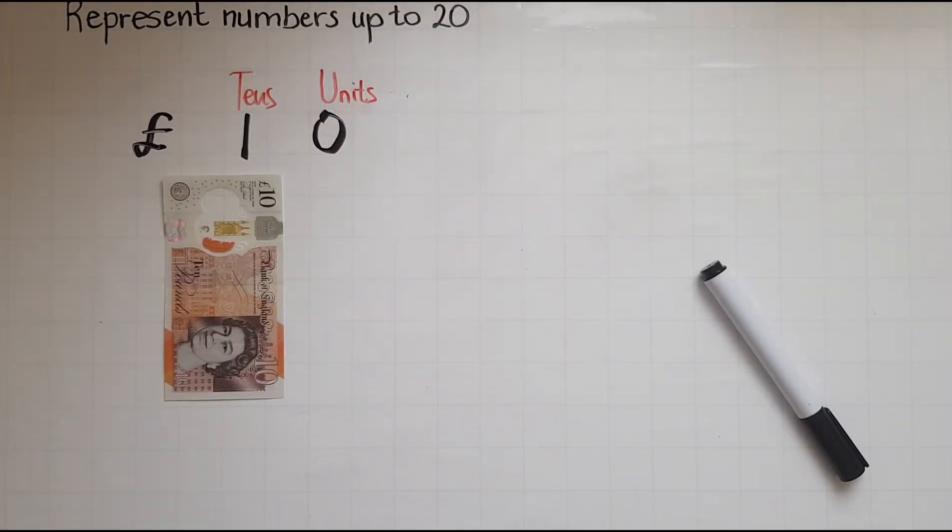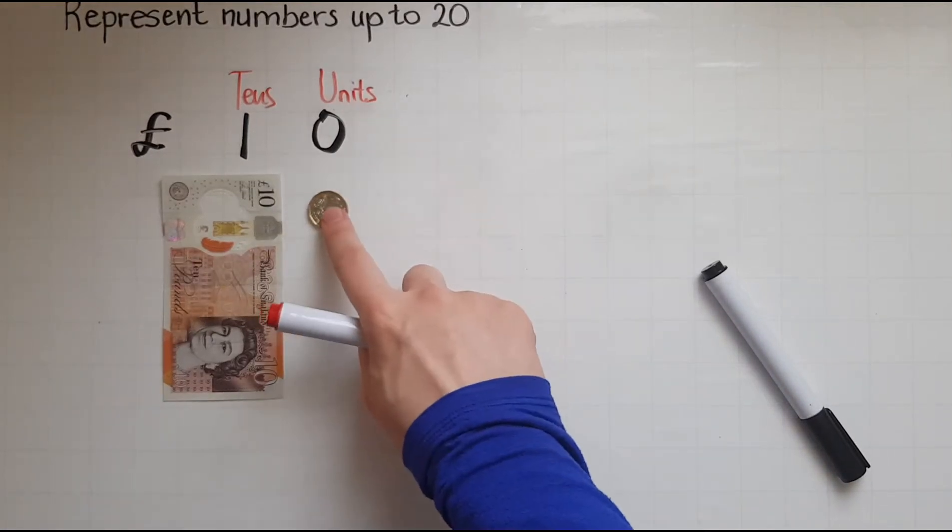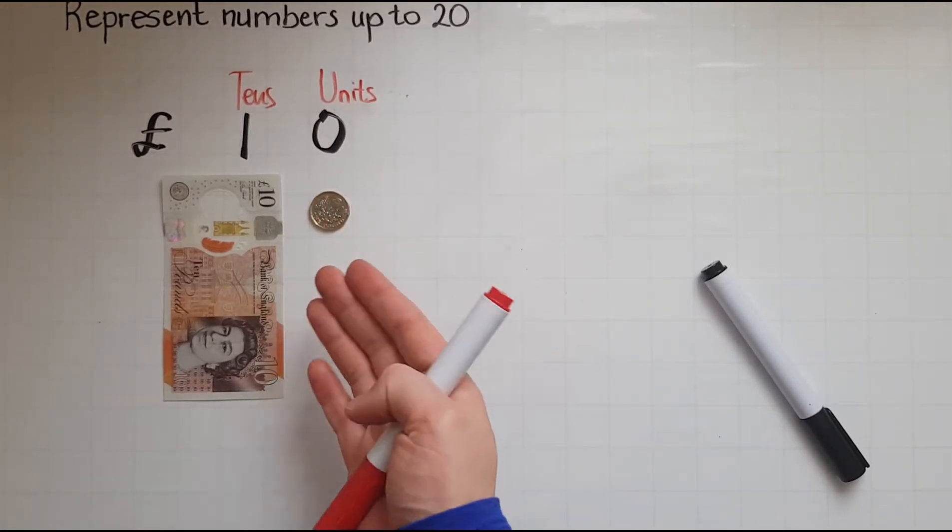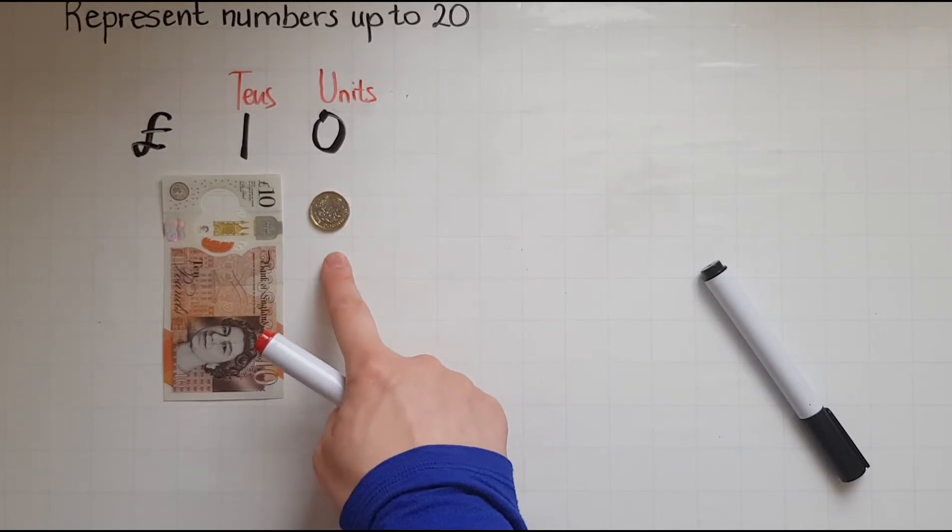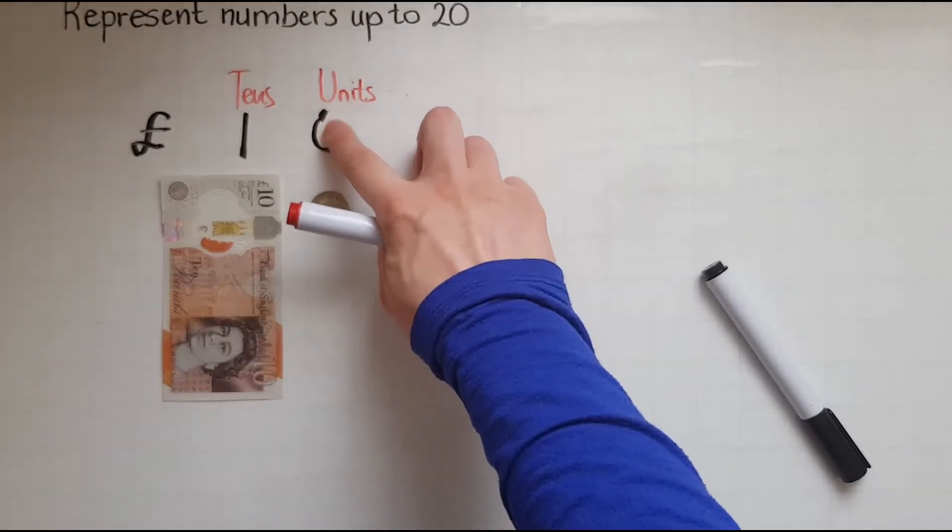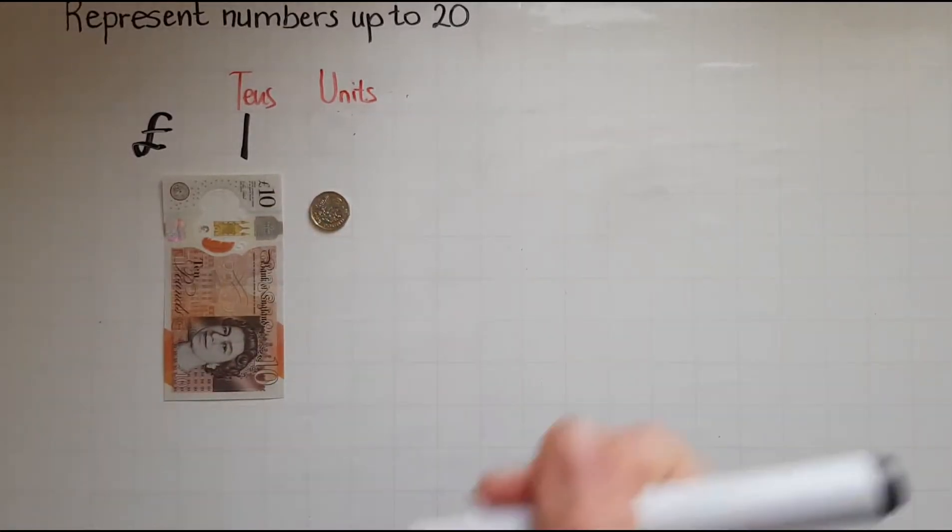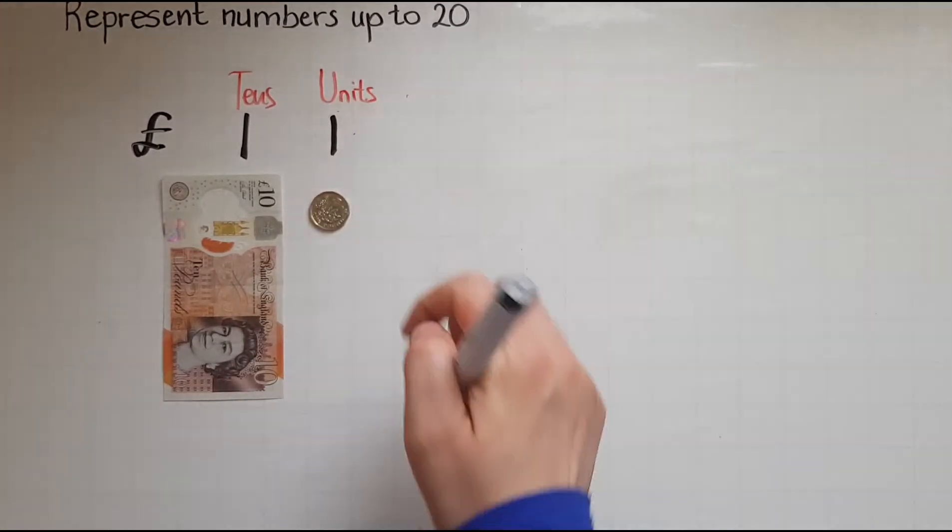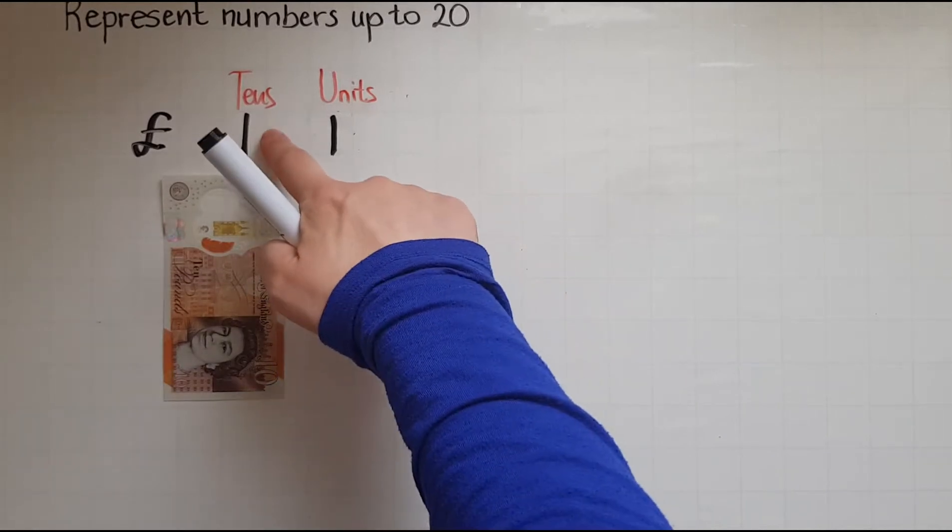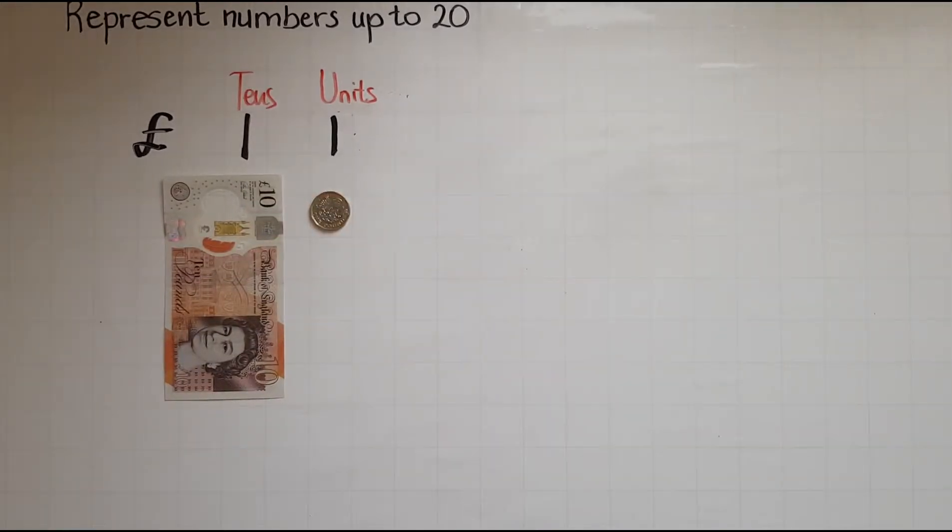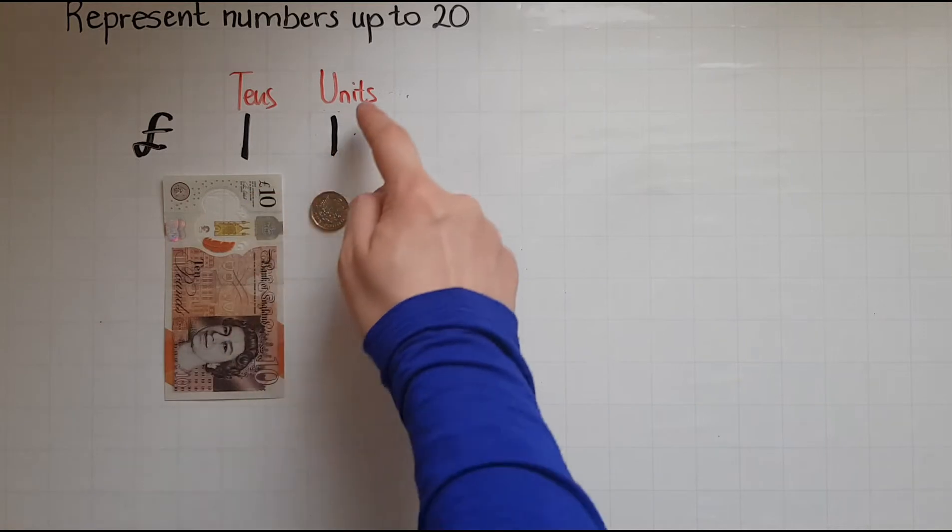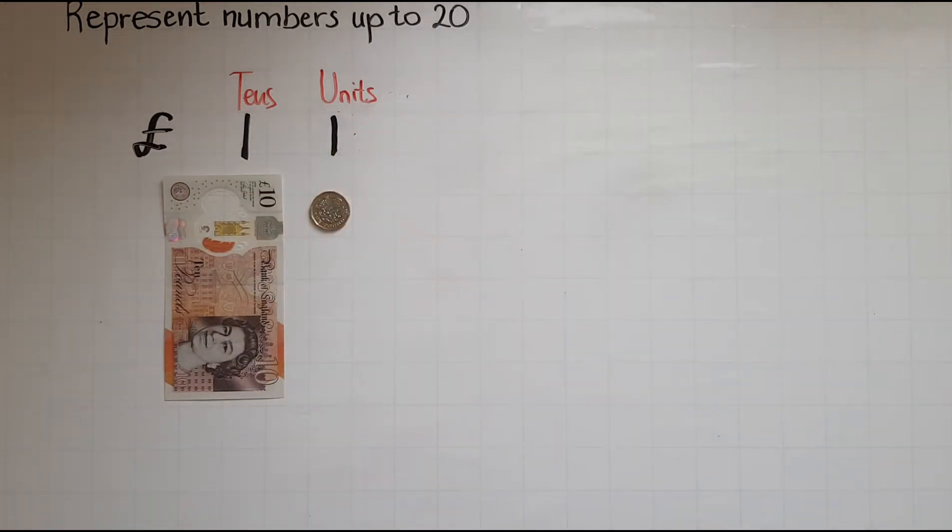If I have eleven pounds, then that's going to go again here because all the coins up to nine would go there. And I'll change that to one. So I've got one pound coin and one ten pound note because that's where the tens go and that's where the units go. So that gives me eleven pounds.